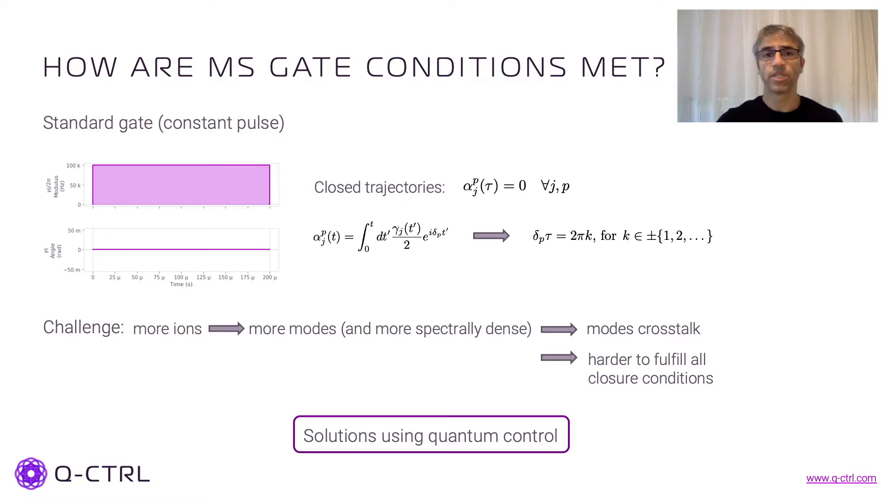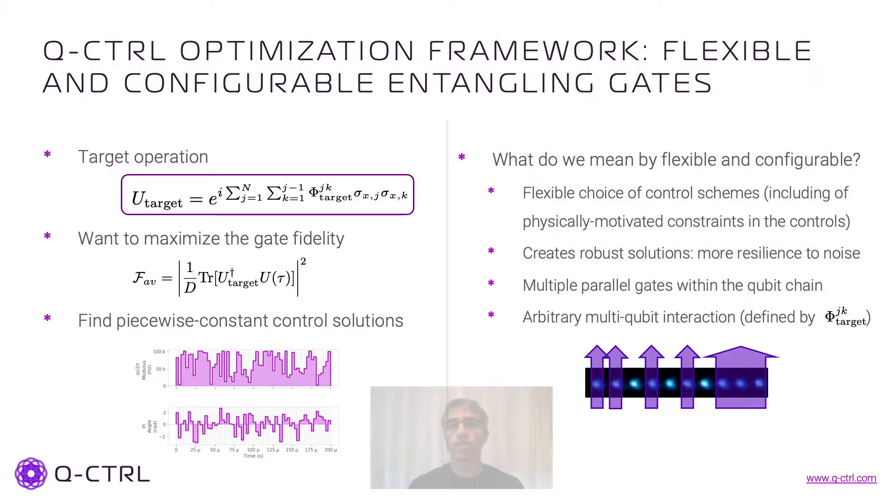So the kind of solution that we're going to present are solutions where we use quantum control to enforce those conditions. So more than just finding solutions, what I want to present to you is actually a framework where we can have flexible and configurable gates using Q-Control solutions. So on the left here, we have basically the steps that we follow for the optimization.